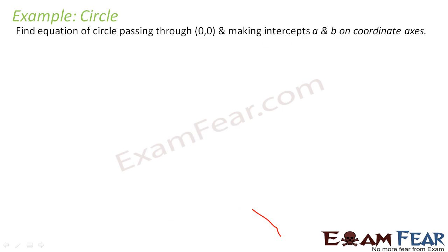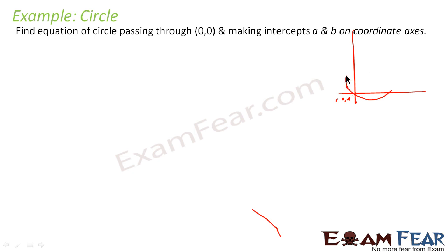Here we have to find the equation of a circle that passes through (0, 0) and makes intercepts of a and b on the coordinate axes. Let's draw the coordinate axis. The circle passes through (0, 0), (a, 0), and (0, b), so the circle looks something like this, passing through the origin and both axis intercepts.